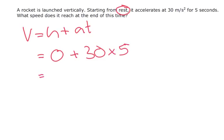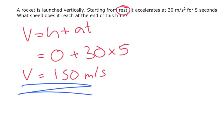OK, so let's have a look. 30 times by 5 is 150 metres per second. So that there is our final answer.